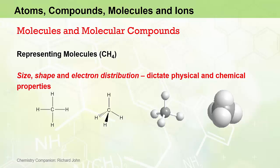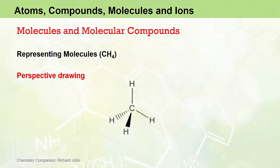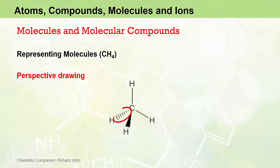Here we see four different representations of the methane molecule, CH4. We've already seen the structural formula, which gives information on the order of attachment of atoms. We've also got perspective drawings, ball and stick models, and space filling models. A perspective drawing has solid lines representing chemical bonds in the plane of the page, solid wedges to represent bonds that extend out from the plane of the page, and dashed wedges to represent bonds that go behind the plane of the page.